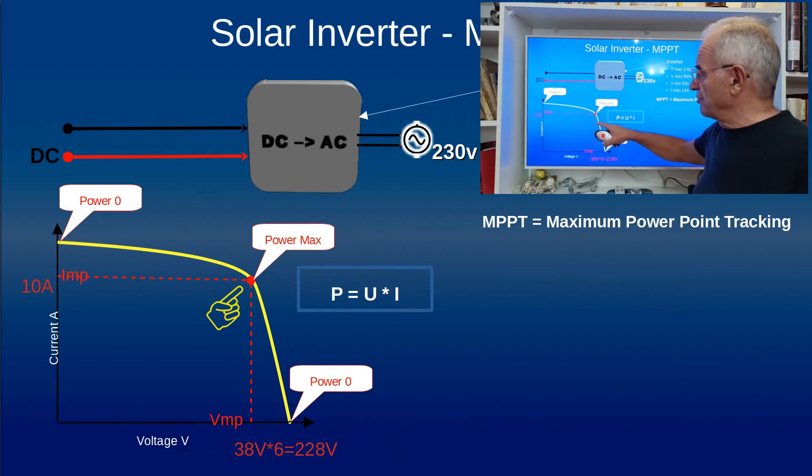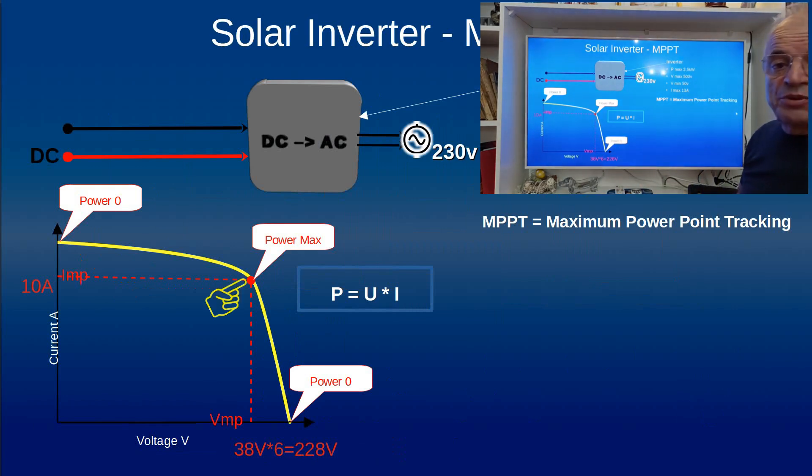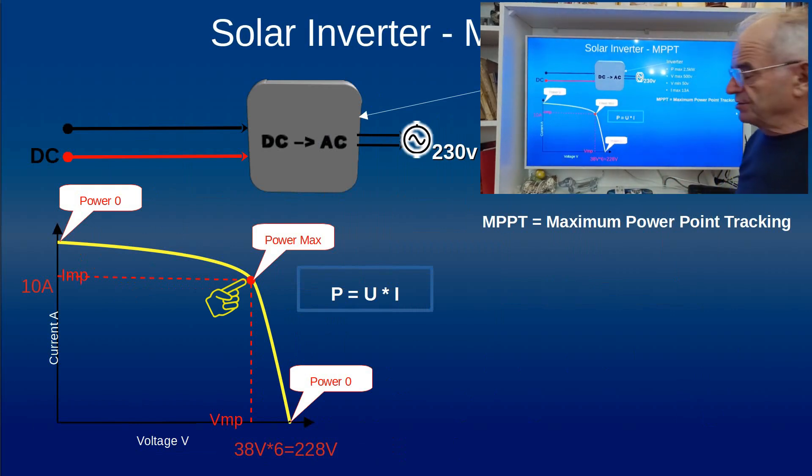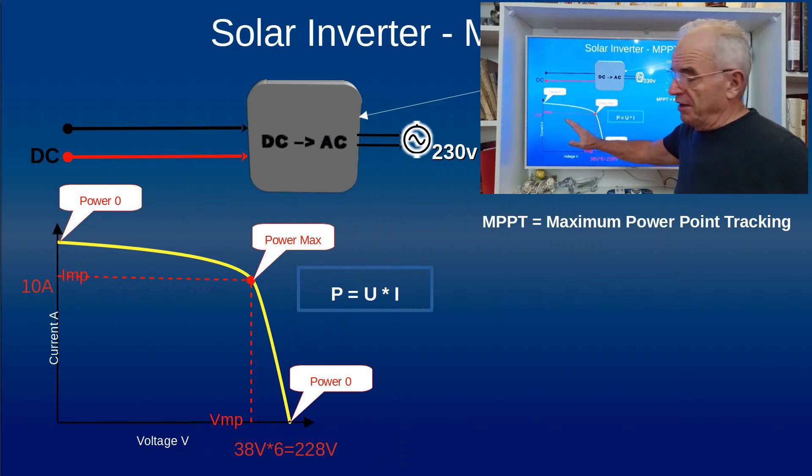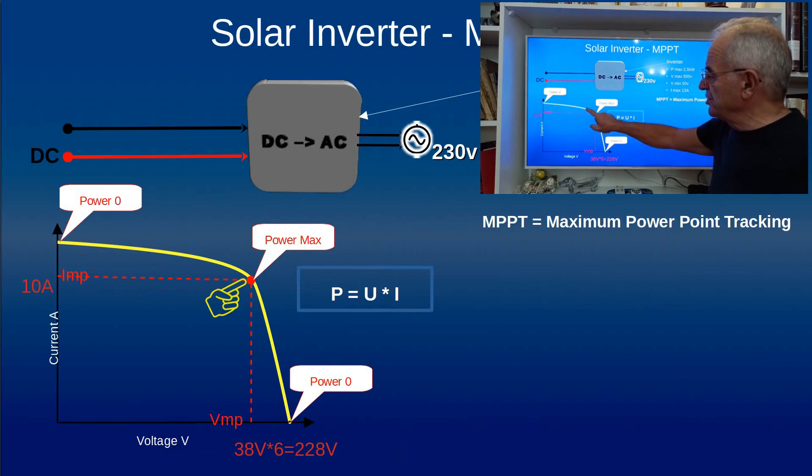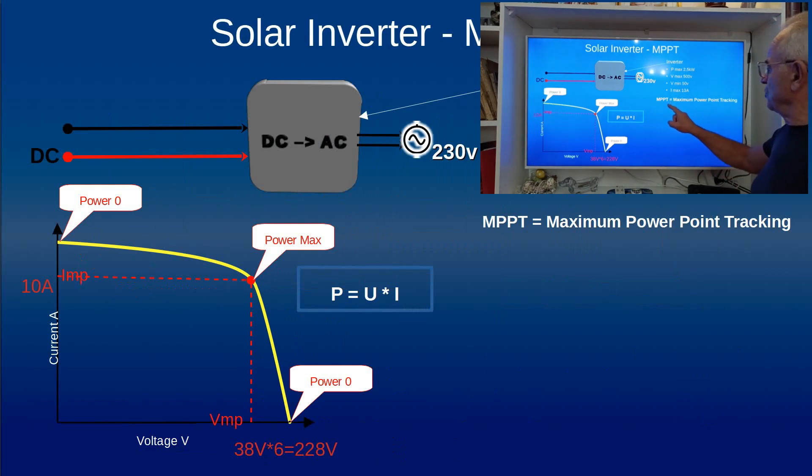But somewhere in the middle there is an optimum for this product where the power is maximum. Here our situation is roughly with a current of 10 amps and a voltage of 38 volts per panel, so in total 228 volts. It's this point which is very important where we have, if we have a lot of sun, the maximum power. Obviously as the sun is reduced, this figure will move on the left. So the purpose of this solar inverter is to track this point.